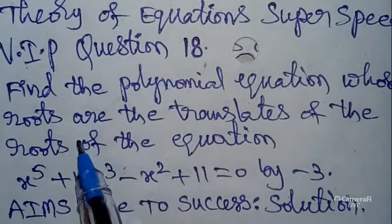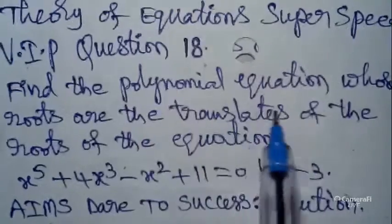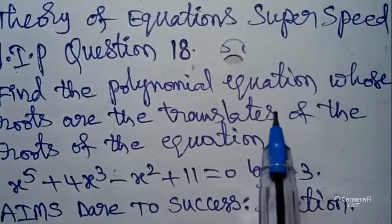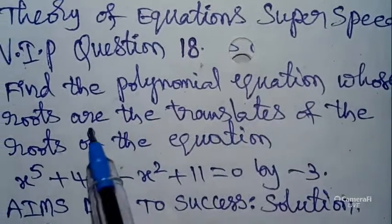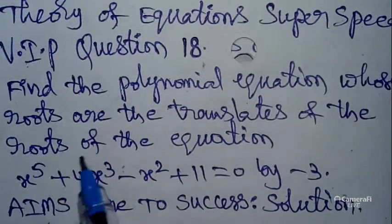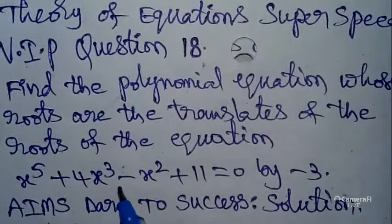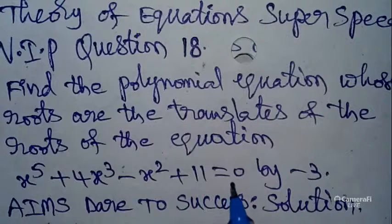Today our question is: find the polynomial equation whose roots are the translates of the roots of the equation x⁵ + 4x³ - x² + 11 = 0 by -3.